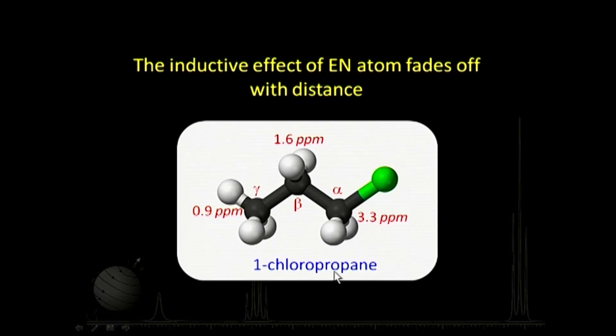One more important point is that electronegativity effects operate through the inductive effect, which fades with distance. In 1-chloropropane, the alpha methylene protons (adjacent to chlorine) resonate at about 3.3 ppm — much higher than methane's 0.23 ppm. The beta methylene protons come at 1.6 ppm, and the gamma carbon protons come at 0.9 ppm. This shows that the pulling effect of the halogen atom decreases as we move further away from the electronegative atom.